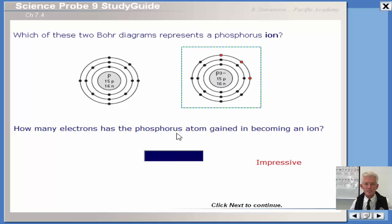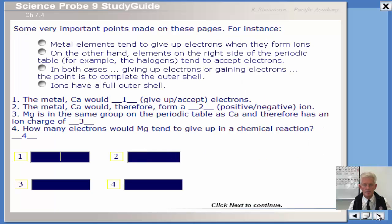So that's the one that is a phosphorus ion. How many electrons is the phosphorous atom, that's this guy, gained to become this guy? An ion? One, two, three. I would say three. Let's check it out. Why, yes.